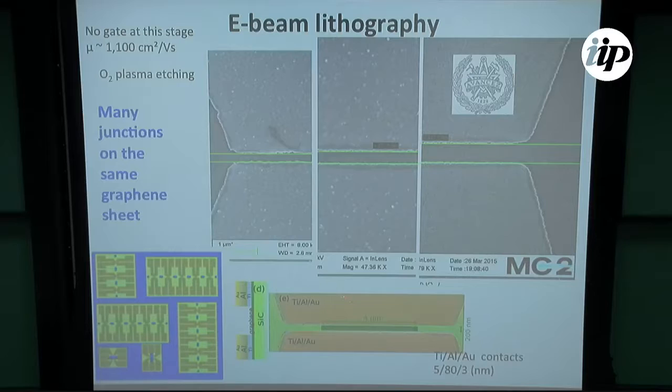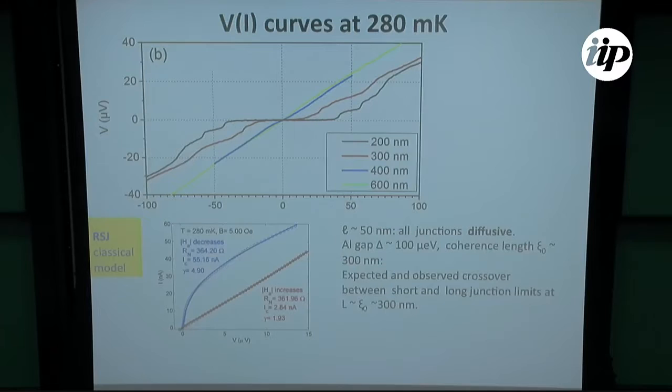The characteristic is strongly nonlinear when you have short length. It starts to be rather flat, rather ohmic-like when you go up to 600 nanometers. And the junctions, as you see, are over-damped.